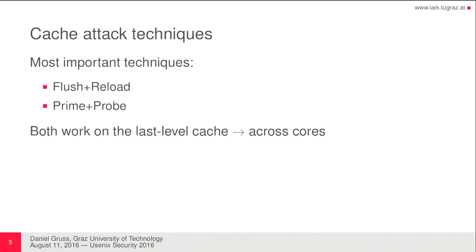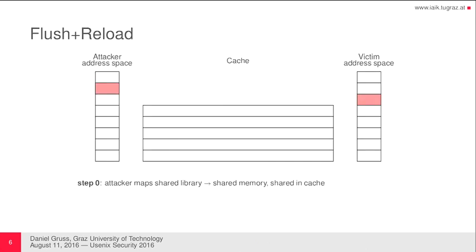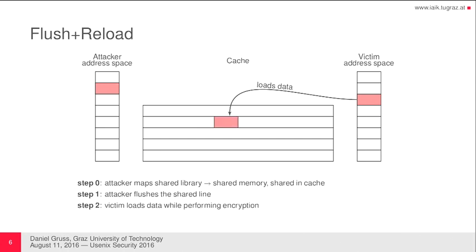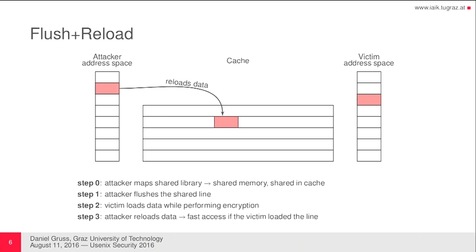The most important techniques we use today are Flush and Reload and Prime and Probe. Both of them work on the last-level cache and both work across cores for this reason. Flush and Reload works like this: you have an attacker address space and a victim address space and a cache in the middle. If you access a memory location, it will be cached for both at the same time because the CPU cache is shared. Now the attacker can just remove a particular cache line. Then if the victim reloads the data, the attacker reloads it too and notices it is now a cache hit — meaning the victim must have reloaded that specific memory location.